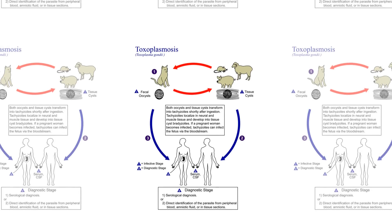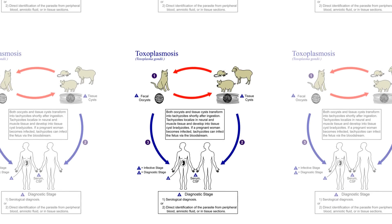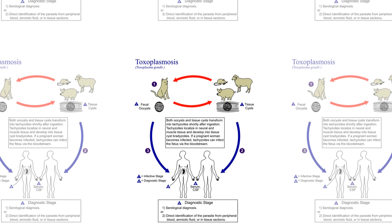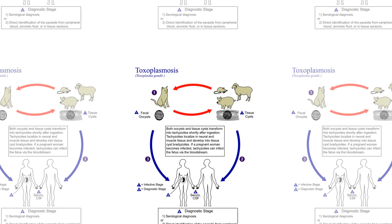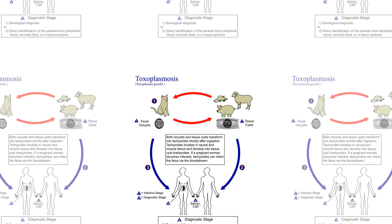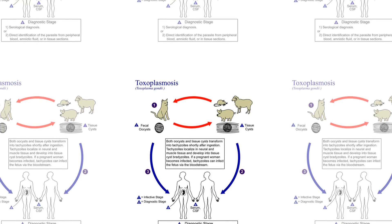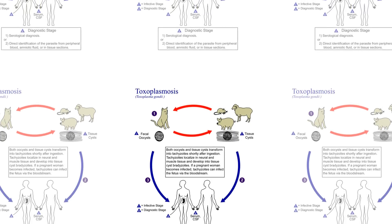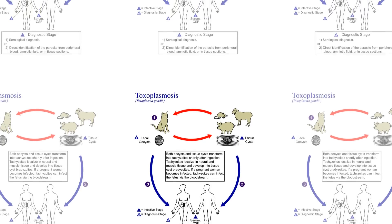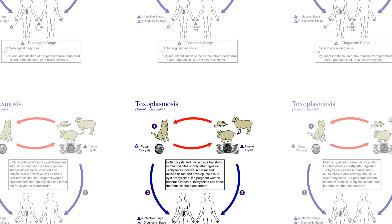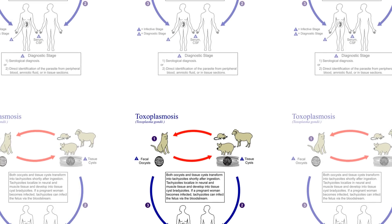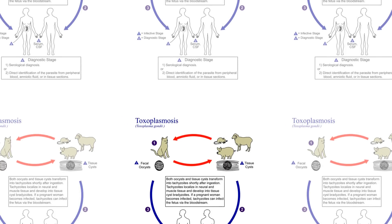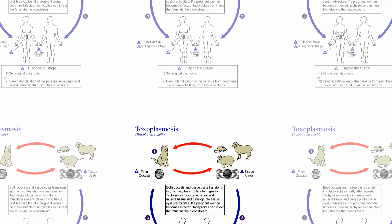Oocysts in cat feces take at least a day to sporulate and become infectious after they are shed. Dispose of cat litter daily to greatly reduce the chance of infectious oocysts being present in litter. As infectious oocysts from cat feces can spread and survive in the environment for months, you should always wear gloves when gardening or working with soil.